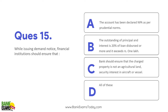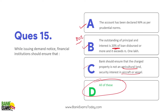While issuing a demand notice, the financial institution must ensure that the account has been declared NPA, at least 20% or more of the amount should be in default, and the minimum default amount should be ₹1 lakh. The bank should also ensure that the charged property is not agricultural land, and SARFAESI is not applicable to aircraft or vessel. So the correct answer is D — all of the above.